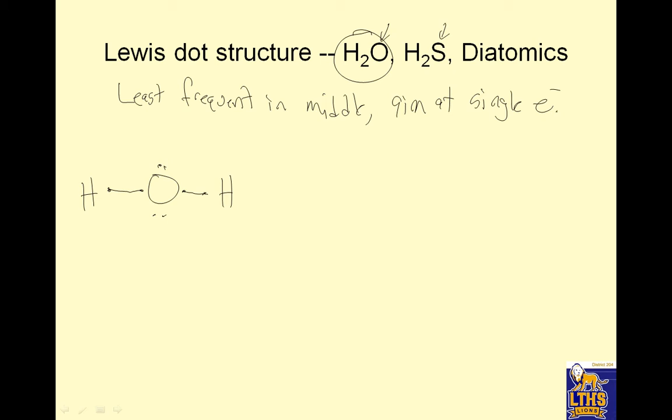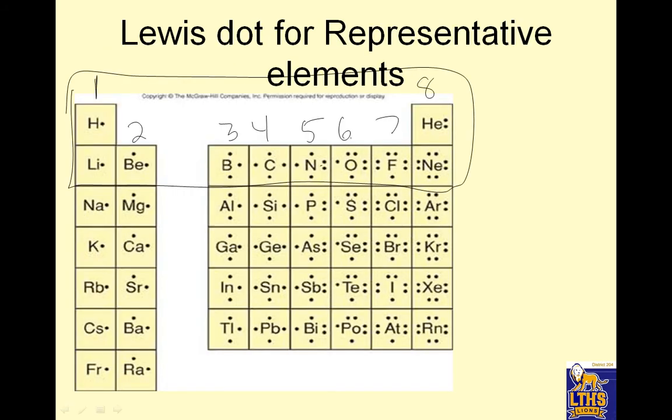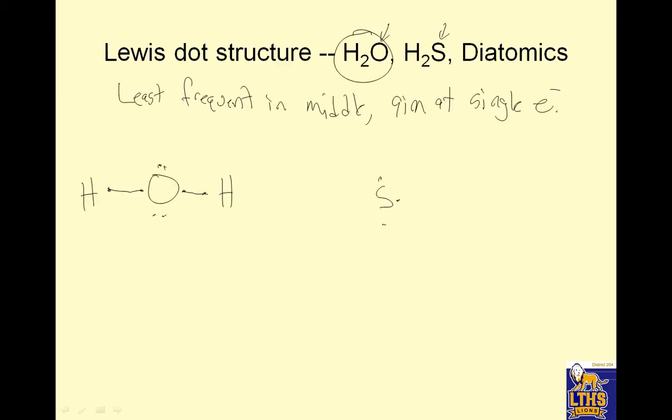H2S. S is the single one. S has, how many valence electrons does S have? Six. One, two, three, four, five, six. And it's got H's again. H, H. And I know it has one from last time. Connect the dots.